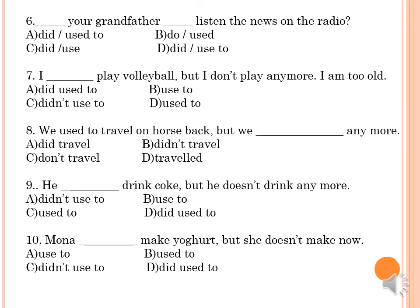Now let's complete the next exercise. Stop the video, answer, then we will check again. Number 6 — this is a question, so the answer uses 'Did' and 'used to' because the question starts with 'Did', followed by the subject, then 'used to'. Number 7 — I used to play volleyball. Well done. Number 8 — We used to travel on horseback, but we don't travel that way anymore.